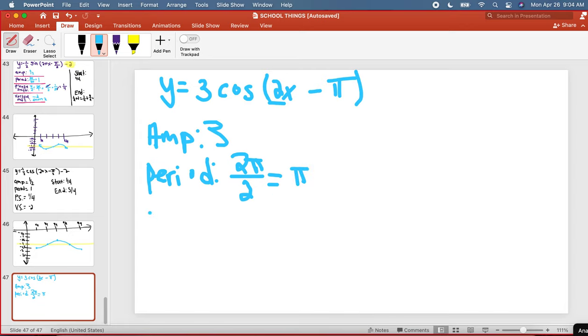Then we have our phase shift, which we are going to call ps. And our ps is c divided by b. So pi divided by 2, or just pi over 2. And then our midline is going to be at 0.